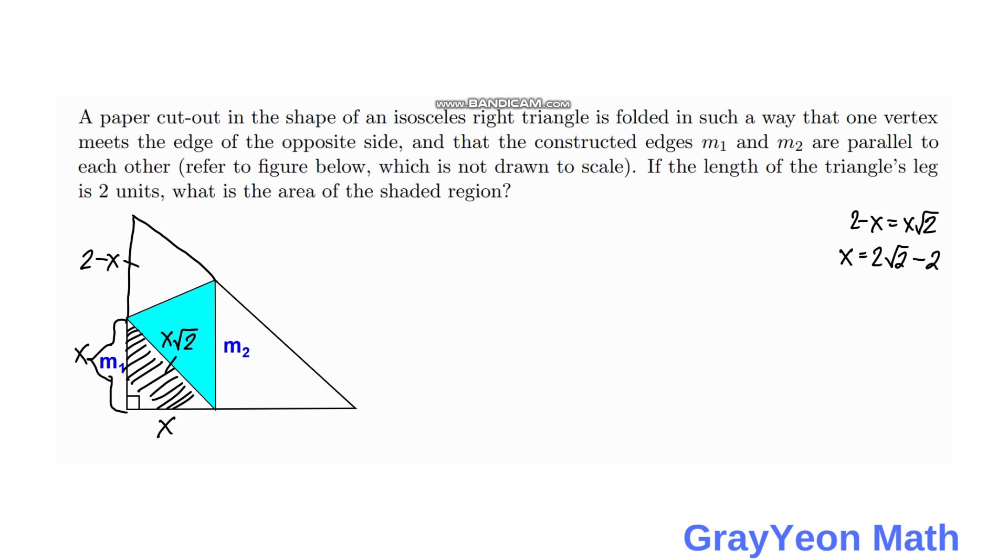Next we find the value of 2 minus x. And 2 minus x is equal to x times square root of 2. And since we got x as 2√2 minus 2, then we just need to multiply this by √2.